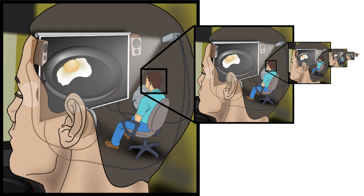The homunculus argument is a fallacy arising most commonly in the theory of vision. One may explain human vision by noting that light from the outside world forms an image on the retinas in the eyes and something or someone in the brain looks at these images as if they are images on a movie screen.